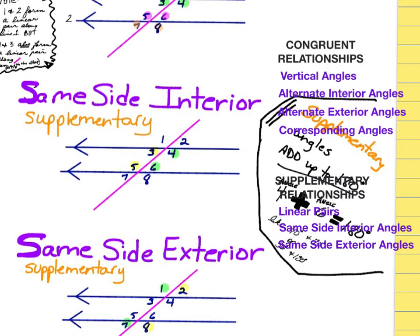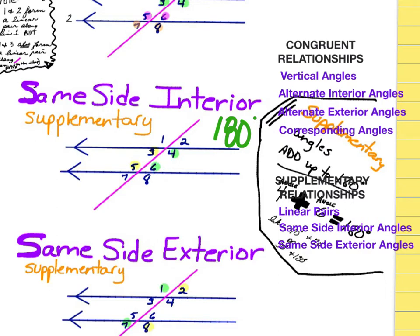Same side interior also makes a supplementary situation, so these are 180 degrees. Same side means both angles are on the left side of the transversal, or both on the right side. Interior means we look only on the inside of the two parallel lines. So this would be three and five, and four and six.